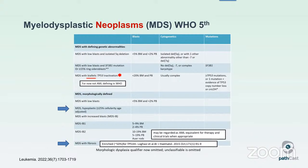One thing omitted from the WHO classification is the number of dysplastic lineages. There are subsequent studies by the ICMDS group that do show morphologic dysplasia — the number of lineages that are dysplastic — is important. I still indicate in my reports the lineages that are dysplastic and the number, whether it's single lineage or multi-lineage dysplasia.